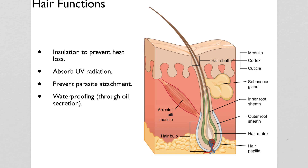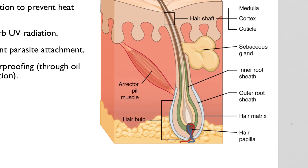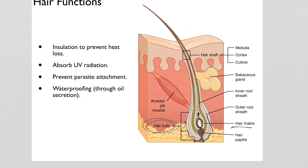Hair follicles generate hair from a cluster of dividing cells in the hair bulb — the root of the hair — which sits deep in the dermis or even down into the subcutaneous adipose tissue. The hair matrix is where cells divide, closely resembling the epidermis: stem cells divide, cells migrate upward, die, and turn into keratin. The hair shaft is made of keratin, just like the stratum corneum, just arranged differently. The hair papilla at the base provides the blood supply that delivers nutrients to the dividing cells.